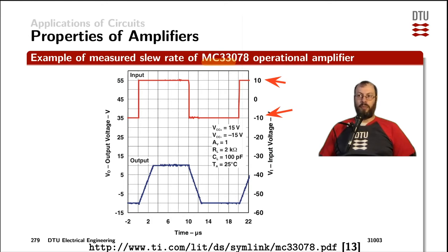We can see from the conditions here that we are operating with the supply rail of plus minus 15 volts. The amplifier is loaded with 2 kilo ohms and we are operating it at an ambient temperature of 25 degrees Celsius.